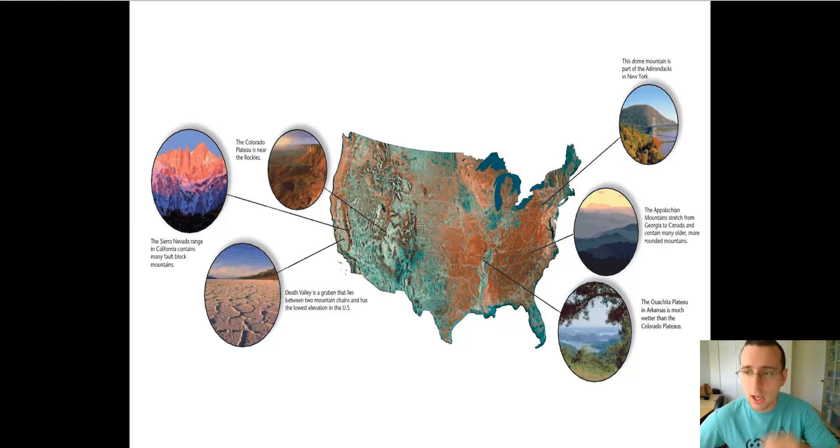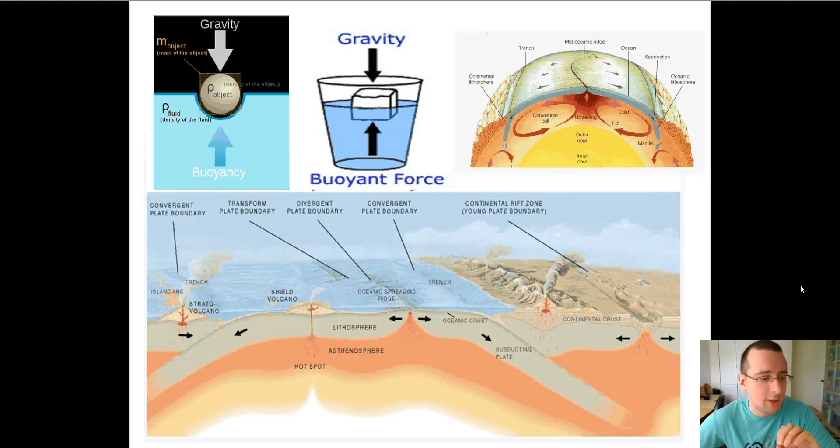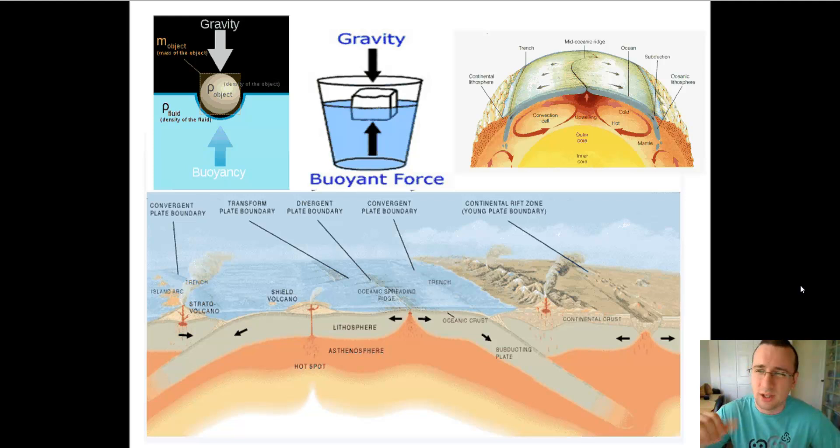The crust of the Earth is only the upper layer, and it contains a brittle material that we call the lithosphere. The lithosphere includes the crust and the upper mantle. The only difference between the two is that the upper mantle is slightly denser. The separation line is called the Moho discontinuity.